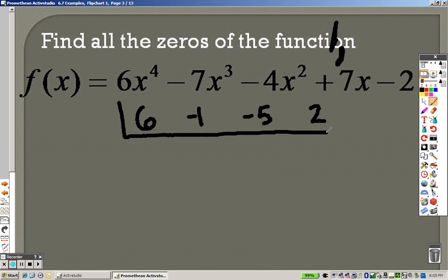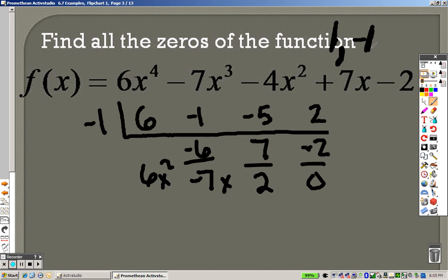Let's keep going. Now that I have this down this far, let's try negative 1. I already know 1 works, so let's try negative 1. Bring down the 6. 6 times negative 1 is negative 6. Add them together to get negative 7. I get positive 7. I multiply those, add them together, I get 2. 2 times negative 1 is negative 2. Well, my goodness, that one worked as well.